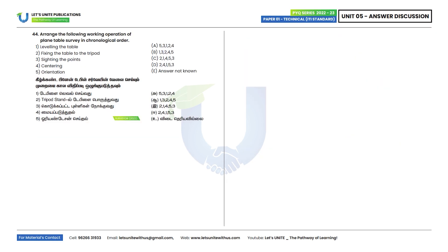Forty-fourth question: Arrange the following working operations of a plane table in chronological order. First, fix the tripod; second, level the plane table; third, centering; fourth, orientation; fifth, sighting the points. The correct order is 2, 1, 4, 5, 3. Option C is the correct answer.